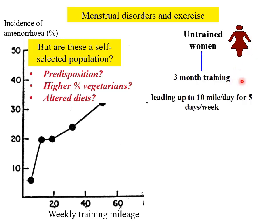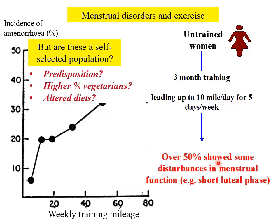Three months of training leading up to 10 miles a day for five days a week — 50 miles a week — and about 50% show disturbances in menstrual cycles. So this is a general response: heavy exercise will disrupt menstrual function.